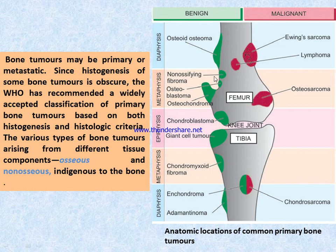This picture shows benign tumors and malignant tumors. The green part shows the benign tumors and the pink part shows malignant tumors.